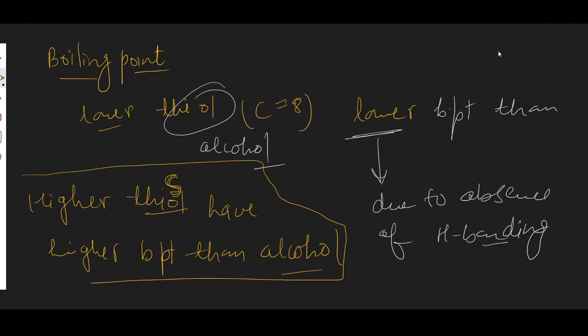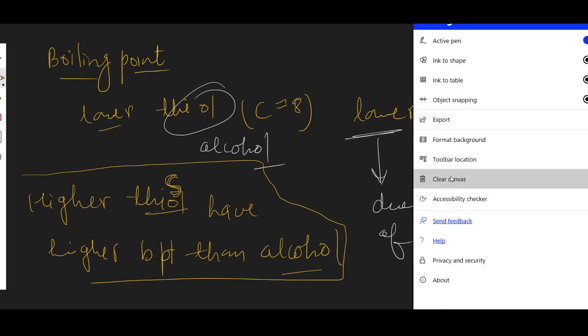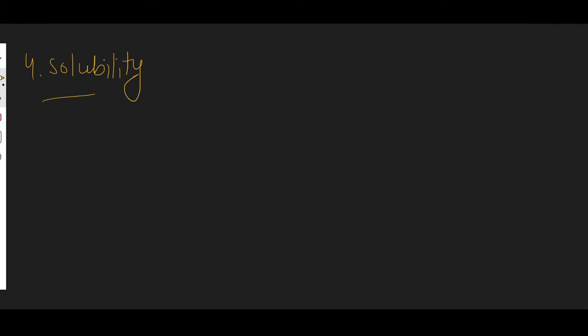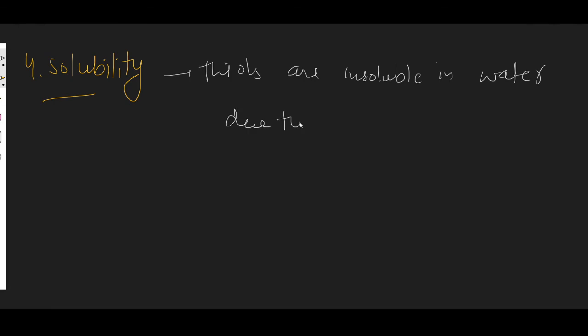The fourth property is solubility. Thiols are insoluble in water due to the absence of hydrogen bonding. Since thiols do not form hydrogen bonds, they are insoluble in water, whereas alcohols are soluble in water. So these are the physical properties of thiols. I hope you have understood them. In the next lecture we will discuss the chemical properties of thiols.